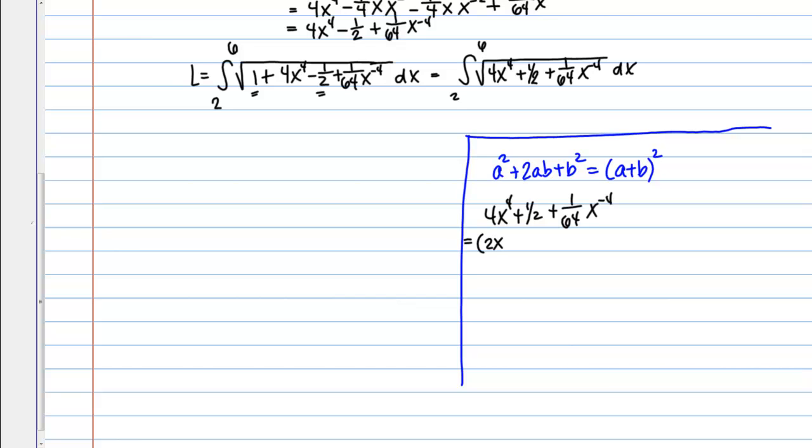So I can write that as 2X squared quantity squared and let's leave off that middle part for a second. In this last term, I can write as 1/8 X to the negative 2 squared. Then I see my first and last terms are definitely something squared and something squared, but for it to be a perfect square trinomial, that middle term has to be 2ab. So let's see if that's true.